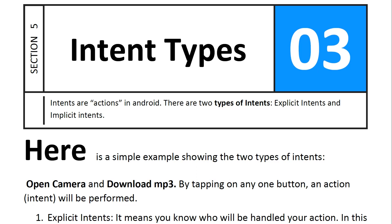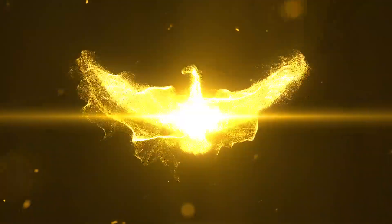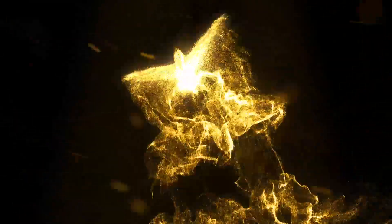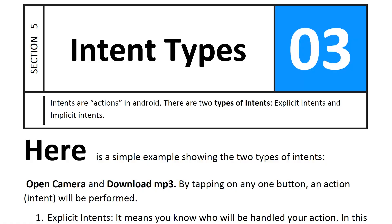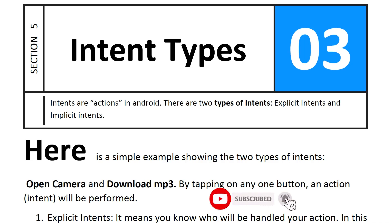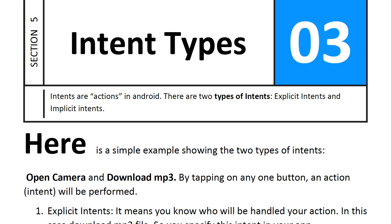Hello again. In this tutorial I will show you the intent types in Android. Intents are actions in Android. There are two types of intents: explicit intents and implicit intents.